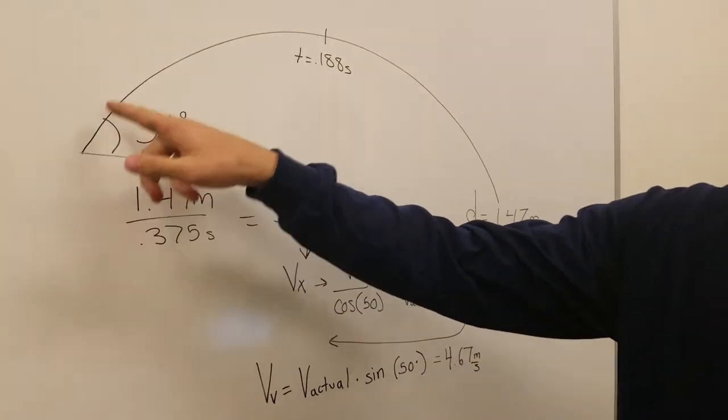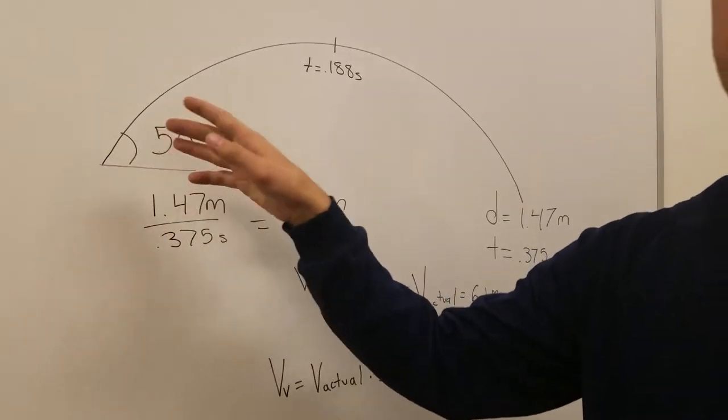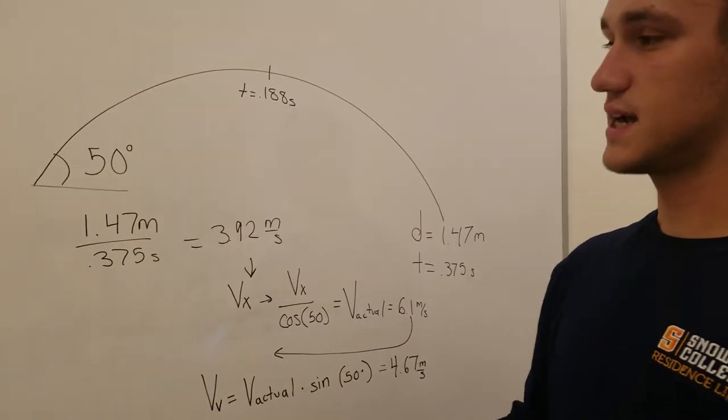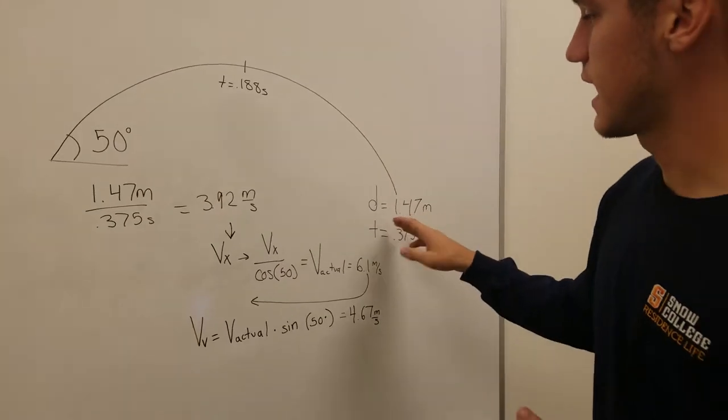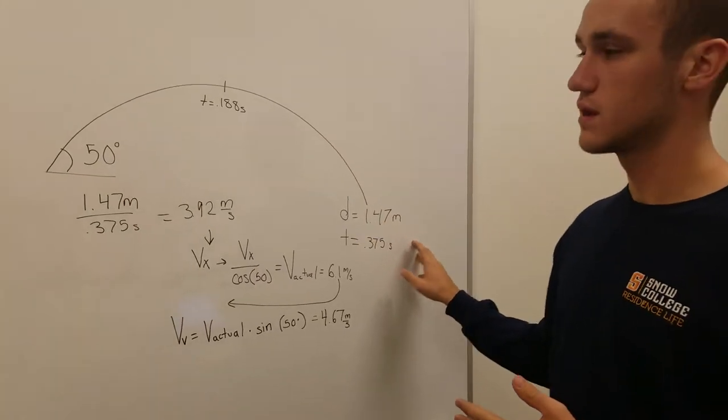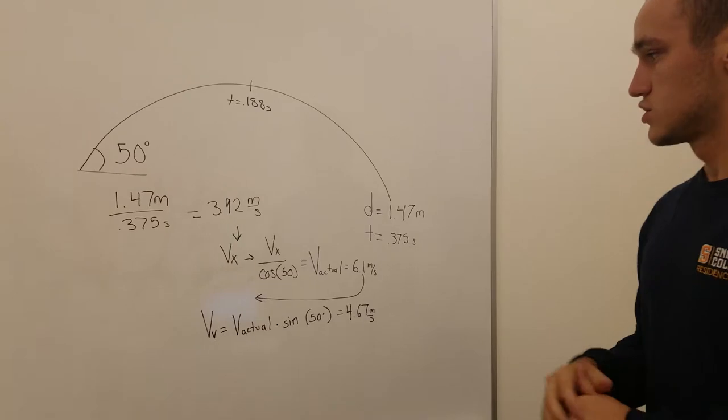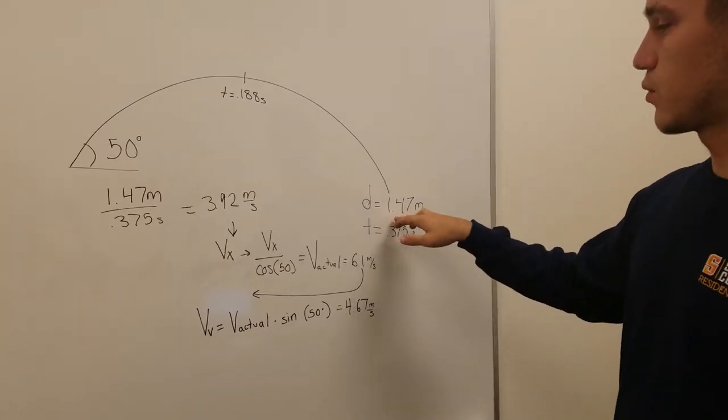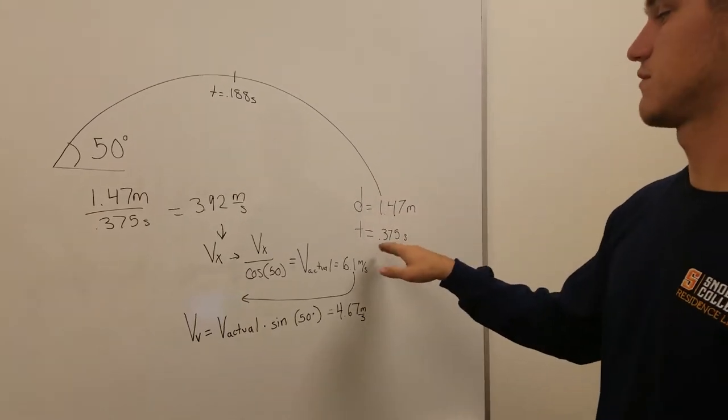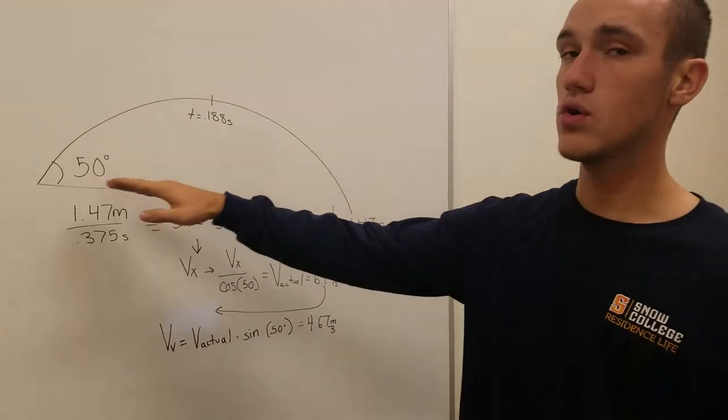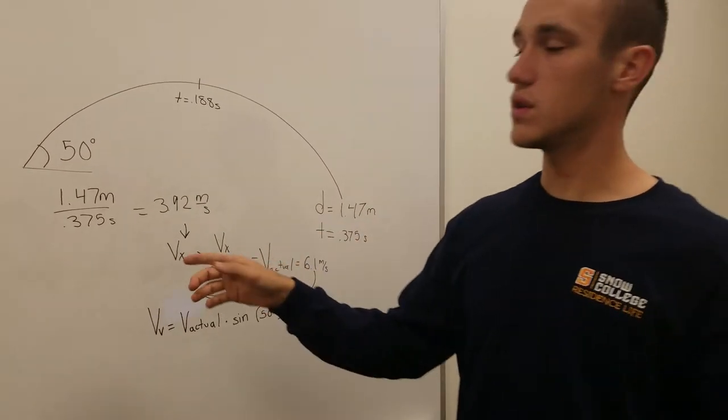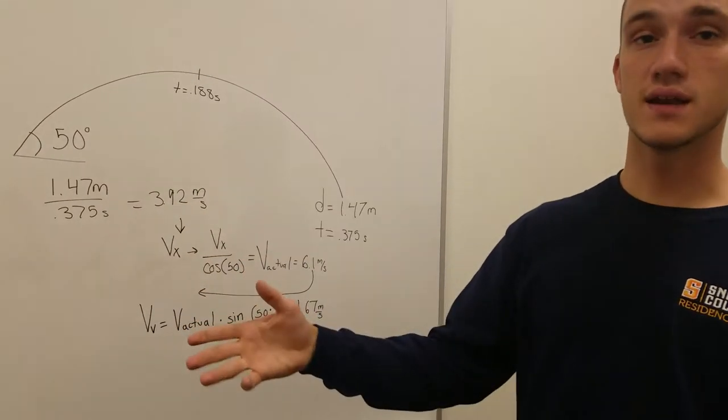When the marble left the catapult, it left at an angle of 50 degrees. We decided that we needed to figure out the time it took to land and the distance that it would travel. This marble traveled a distance of 1.47 meters and a time of 0.375 seconds. That means its horizontal velocity came out to a total of 3.92 meters per second.